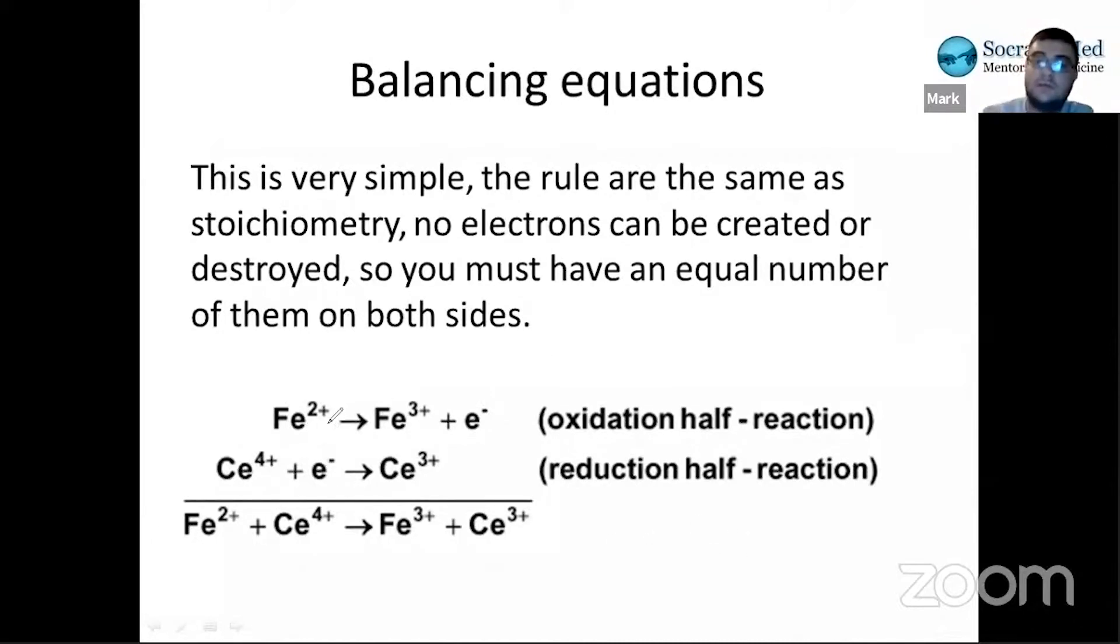And what happens if, for example, you don't have the same number of electrons. So for example, if we weren't doing three plus, we were going to Fe4+, we would need two electrons to be released. Well, now you have two electrons on the right, one electron left, you can't really have that. So how do you fix that? Well, you just multiply this whole thing by two. So you'd have two Ce4+ plus two electrons and two Ce3+, and you just simply multiply by two. And in the final reaction, you just make two, two. That's if this was four plus and you're using two electrons.